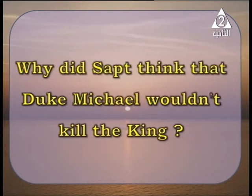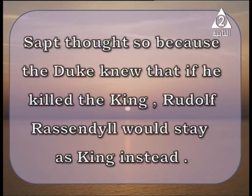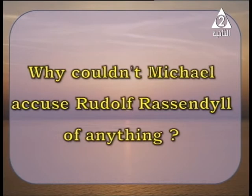Why did Sapt think that Duke Michael wouldn't kill the king? Sapt thought so because the Duke knew that if he killed the king, Rudolf Rassendyll would stay as king instead. فأفضله إن الوضع يفضل زي ما هو.